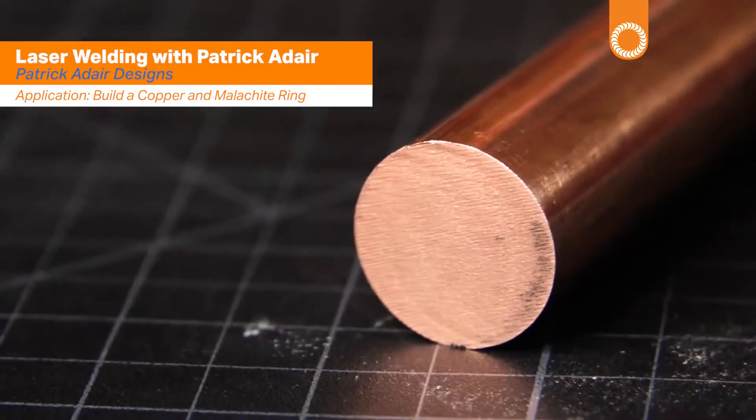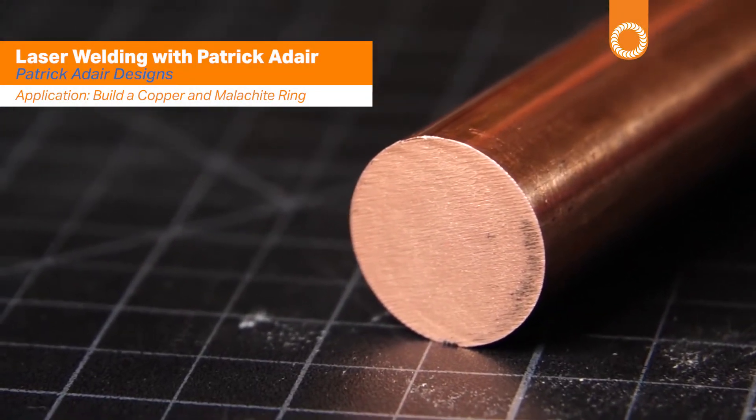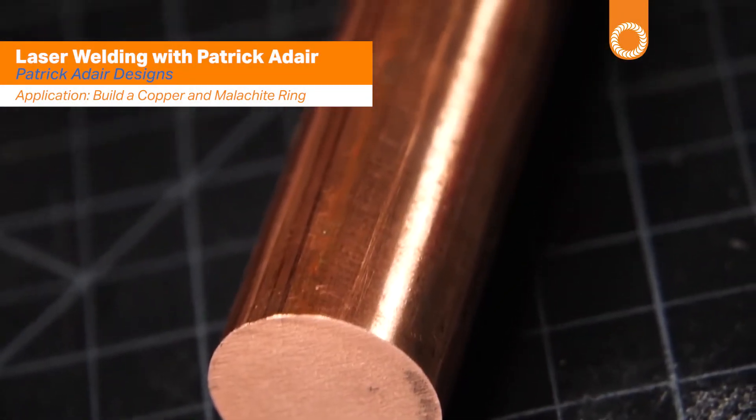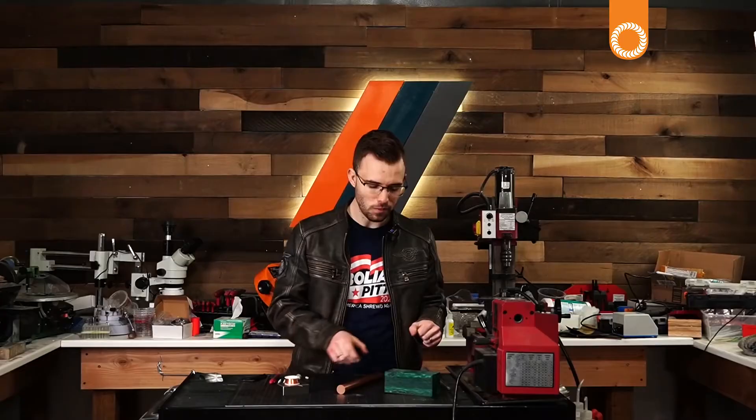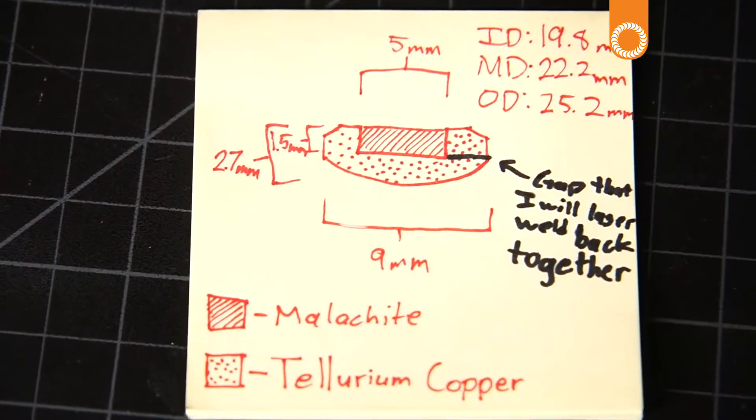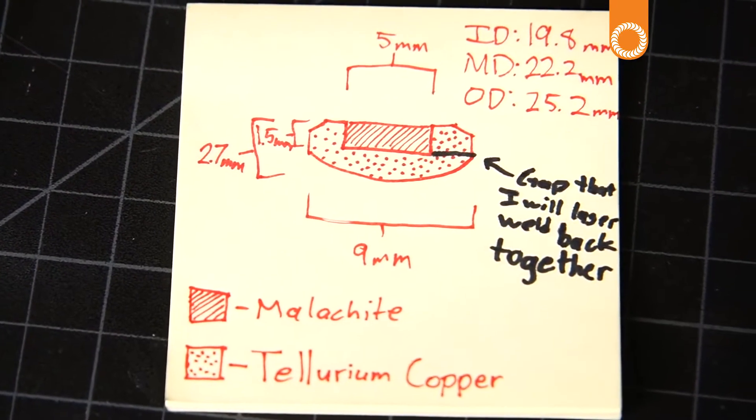First we're going to be using tellurium copper. This is a really interesting alloy that's a lot better for jewelry than traditional copper and coordinates really nicely with that green color. I'll take a piece of this malachite and put it as an inlay onto the ring, then we're going to be left with the seam.